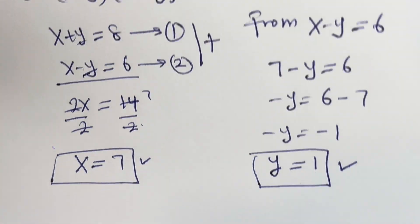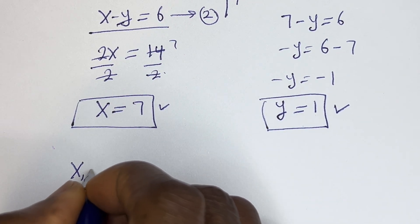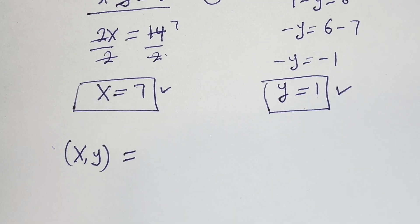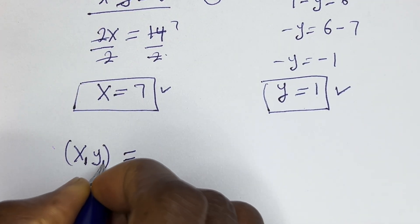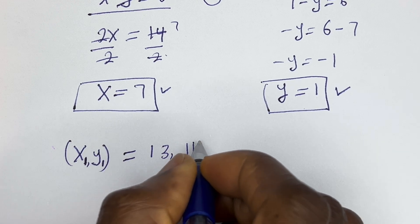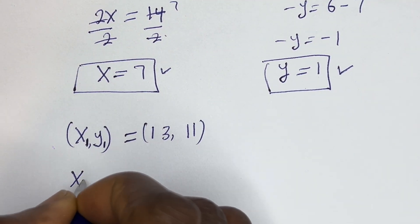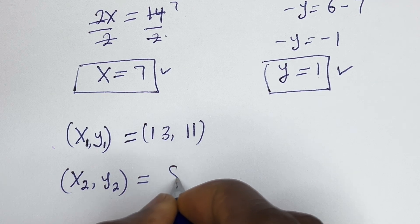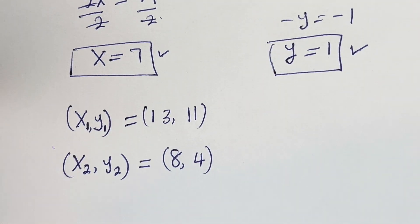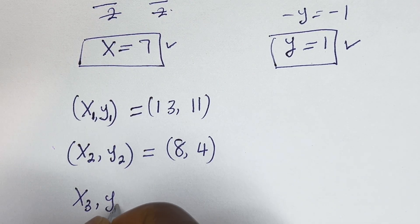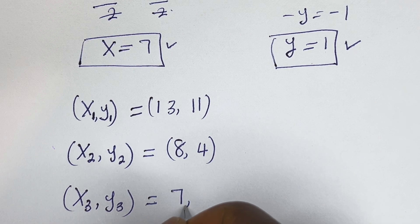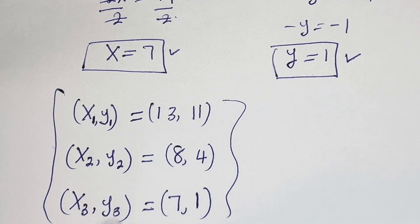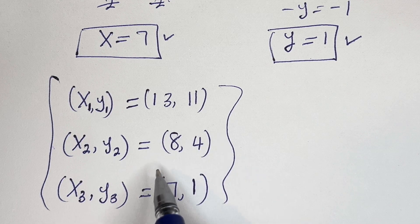Therefore, our final answers are three solution pairs: (S, Y) = (13, 11), (S, Y) = (8, 4), and (S, Y) = (7, 1). These are all the natural number solutions. I hope you enjoyed the video. Thank you for watching. Please don't forget to like, share, comment and subscribe to my channel. Bye.